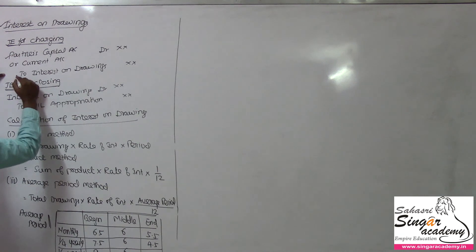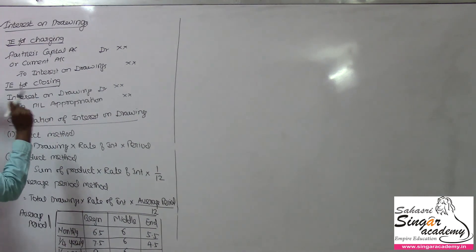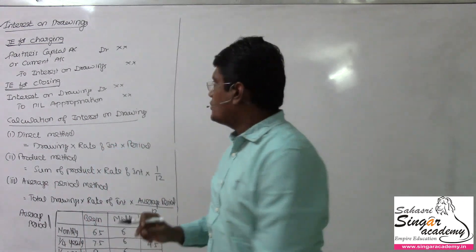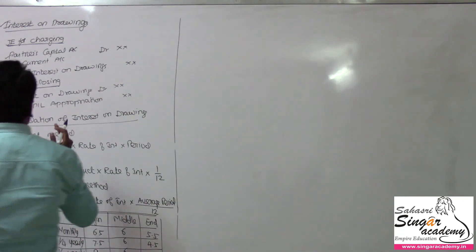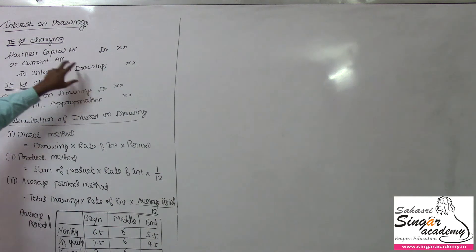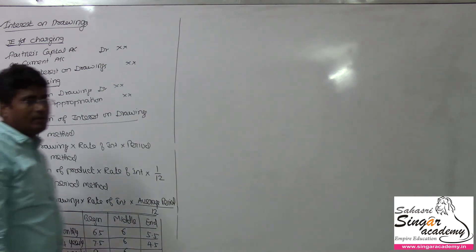Partners capital account debit to P&L appropriation account. Partners capital account debit to interest on drawings. Finally, interest on drawings close to P&L appropriation account. Interest on drawings debit to P&L appropriation account.